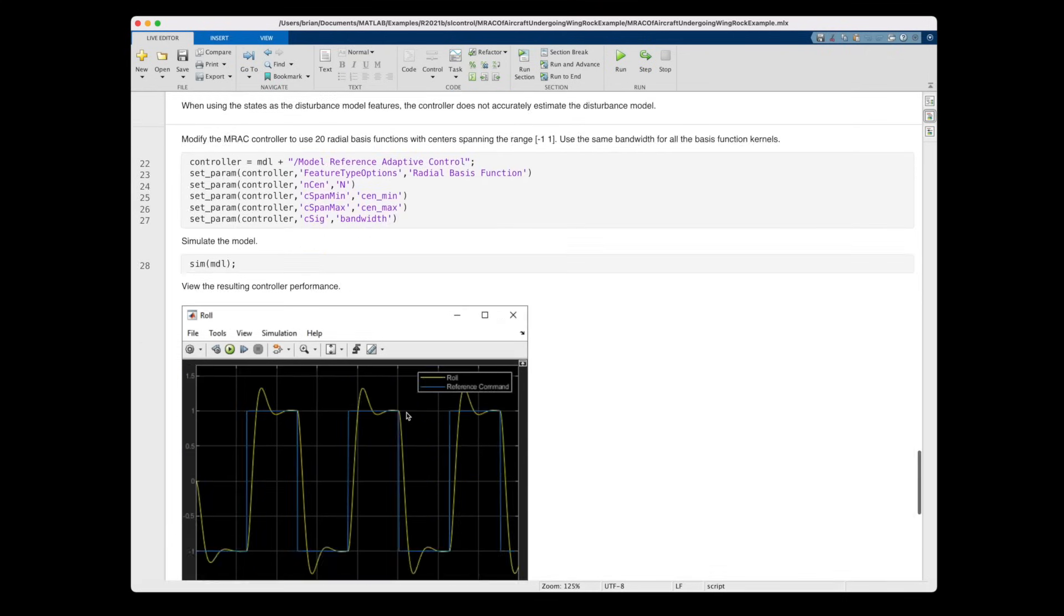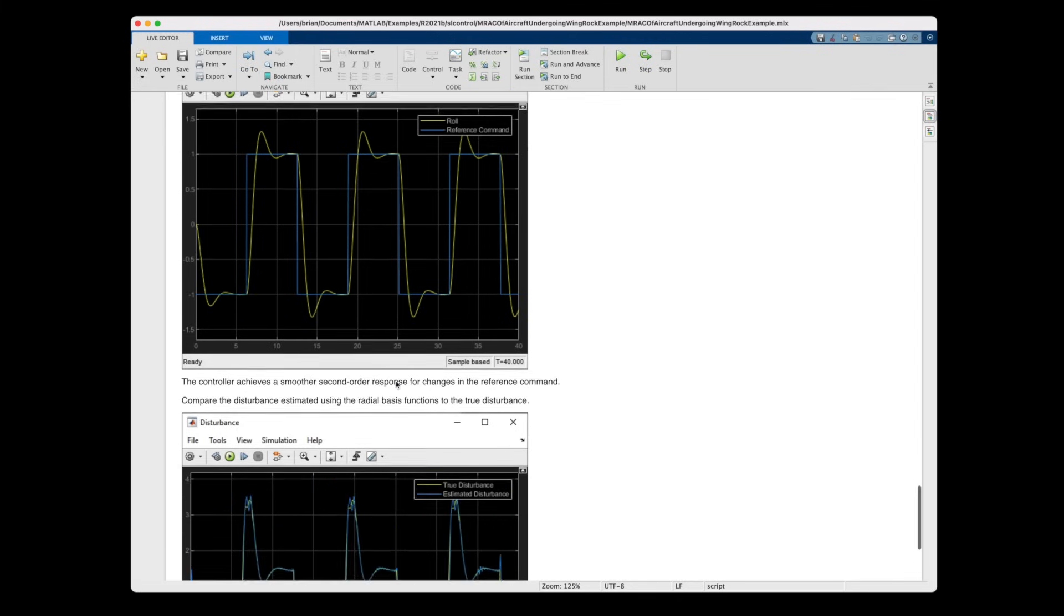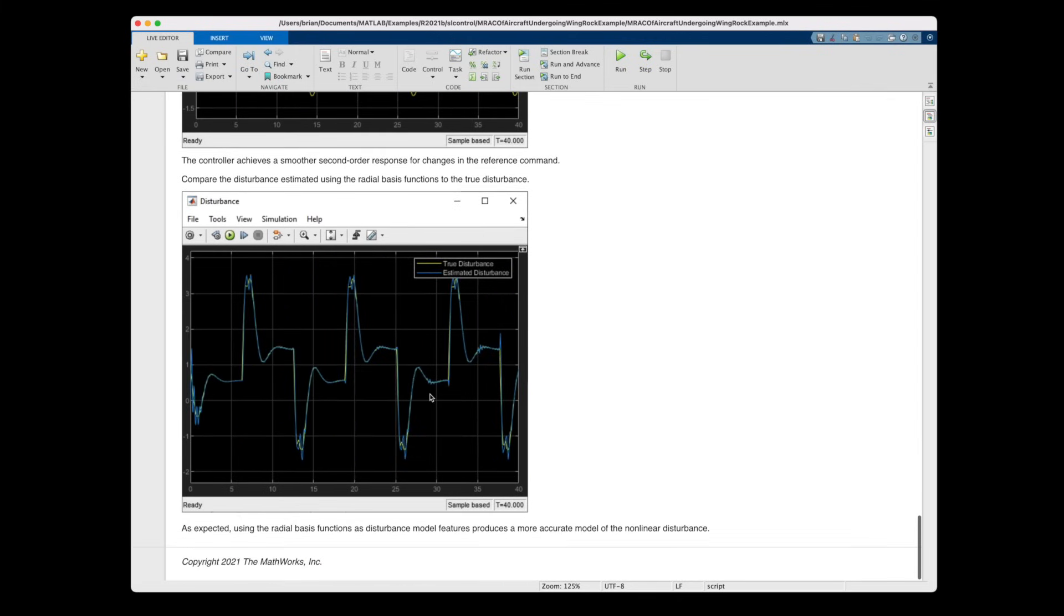So the disturbance was matched pretty well, but there are periods where there's a rather poor estimation of the true disturbance, and that's due to the linear approximation. And if we scroll down some more, we can see the result of the radial bias function feature set, which produces a better overall tracking because of the better nonlinear estimate of the true disturbance. And that's pretty cool, right?